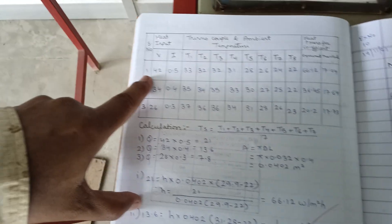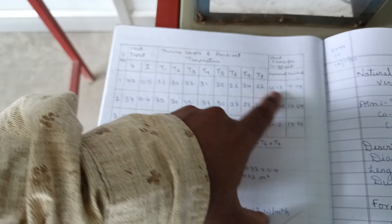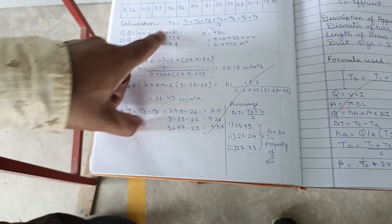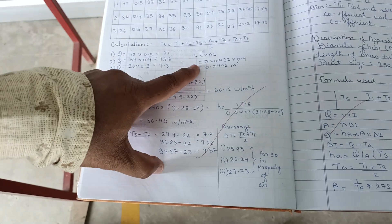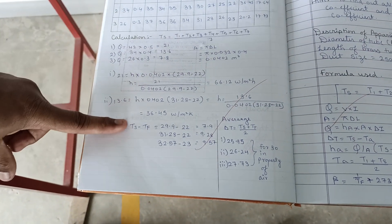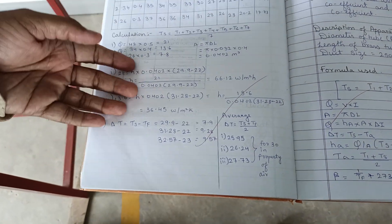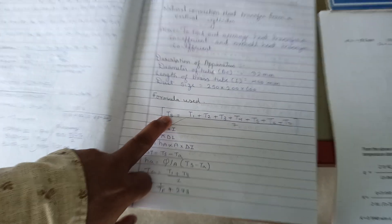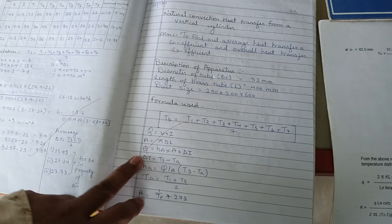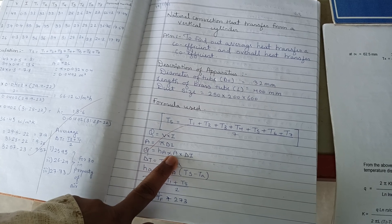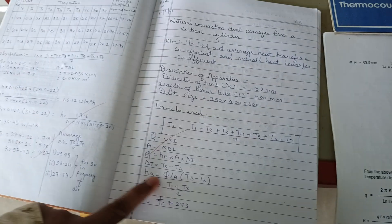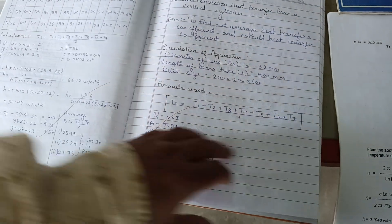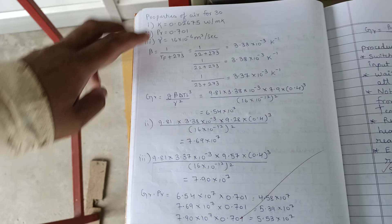The atmospheric temperature around the solid cylinder is taken from a thermocouple suspended in air. We record readings for a particular voltage, current, and thermocouple values, then calculate based on the given formula. We use the average temperature and dimensions of the vertical cylinder — the surface area is calculated as π×d×l. Q is calculated from voltage and current, and using Q = H×A×ΔT, which is Newton's law of cooling, the heat transfer coefficient H is determined.